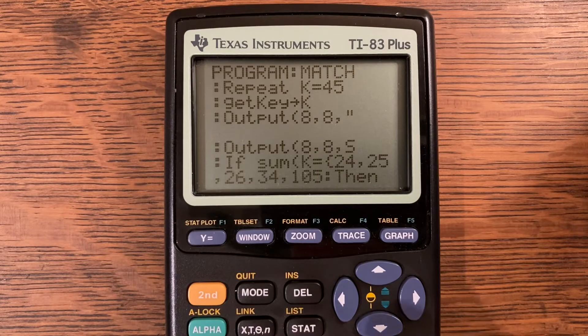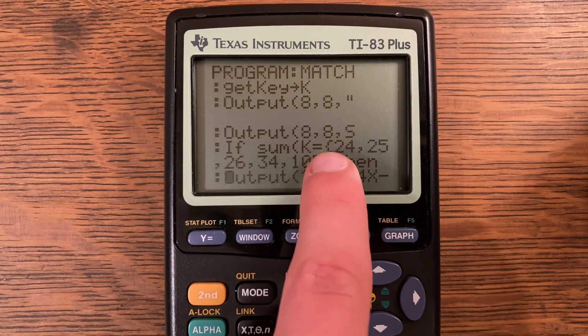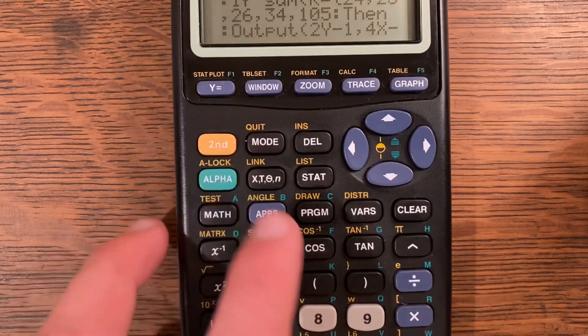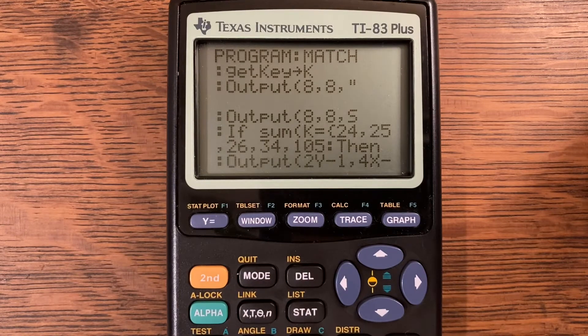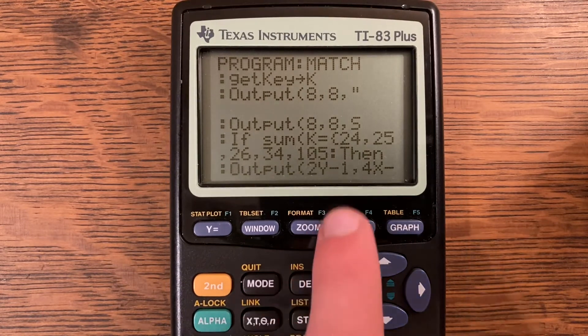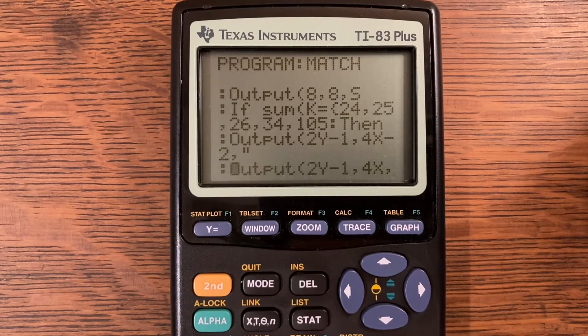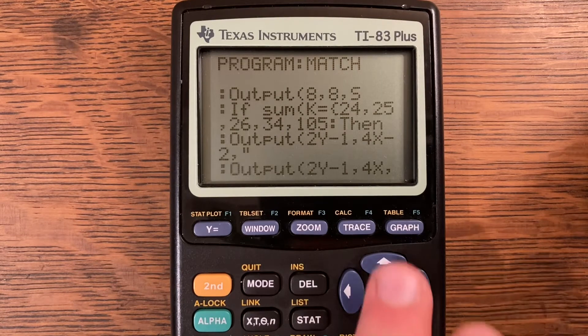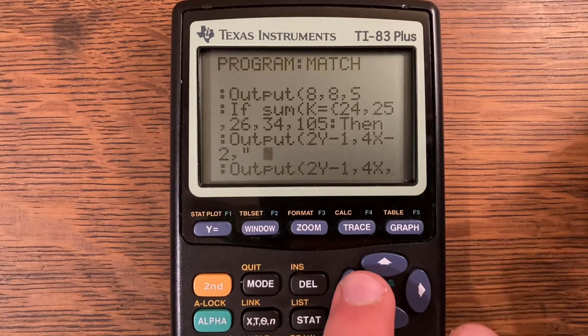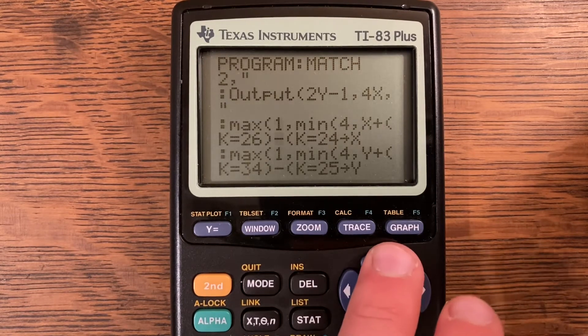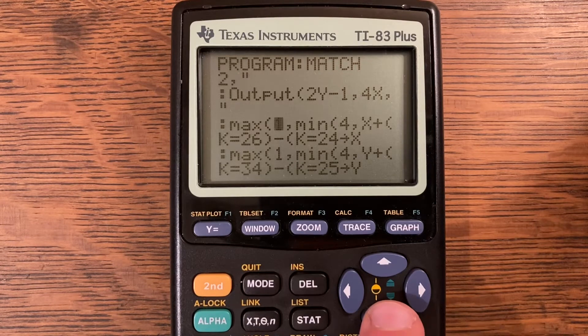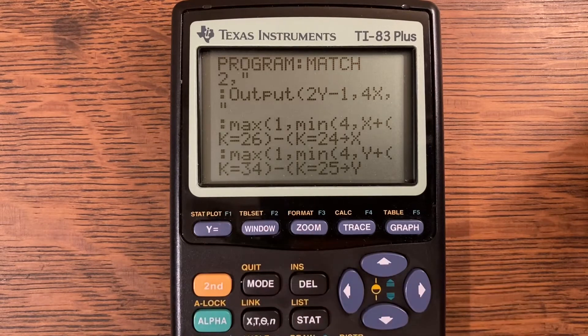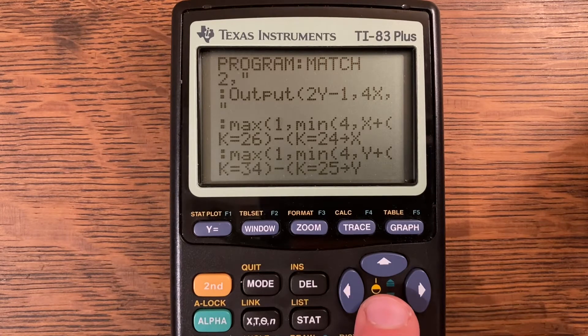Output 8 comma 8 comma S. If sum of K is equal to, make sure you get that fancy bracket there, the fancy bracket is second and then the same parenthesis, 24 comma 25 comma 26 comma 34 comma 105. Then Output 2Y minus 1 comma 4X minus 2 comma quote a space, just one space there. Output 2Y minus 1 comma 4X comma quote a space. Max 1 comma min 4 comma X comma X plus K is equal to 24 comma X comma Y plus K is equal to 34 minus K is equal to 25 store into Y.